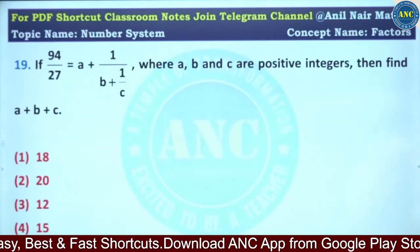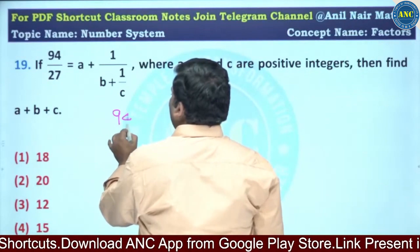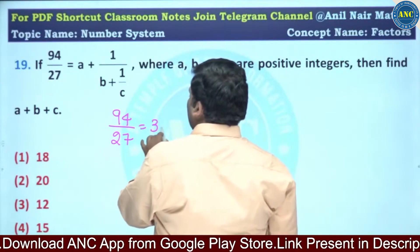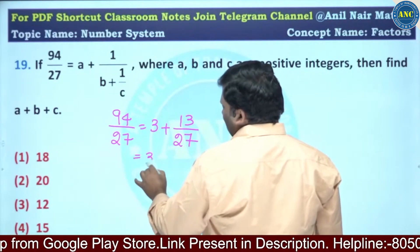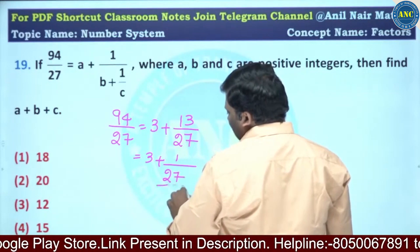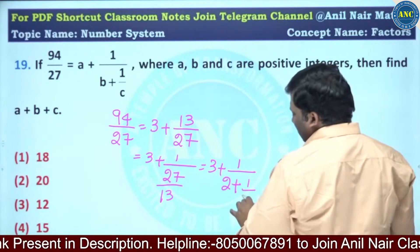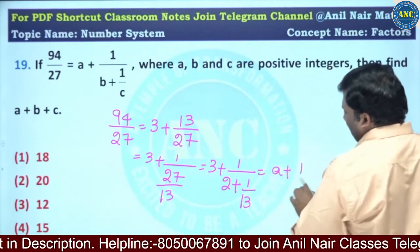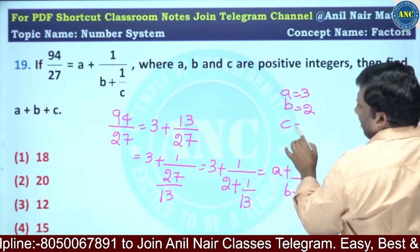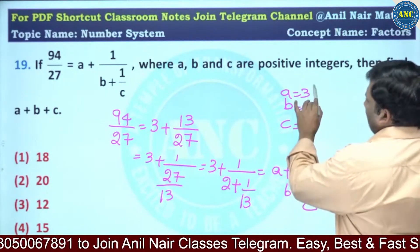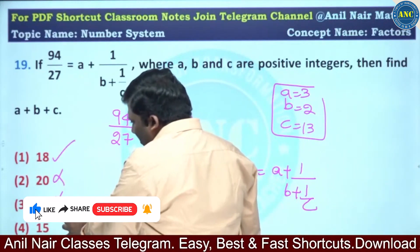Question 19: the numerator is greater than the denominator. 94/27 — since 27 threes are 81, the remainder is 13. So 94/27 = 3 + 13/27, which equals 3 + 1/(27/13). And 27/13 = 2 + 1/13. So the expression is A + 1/(B + 1/C), giving A = 3, B = 2, C = 13. Therefore A + B + C = 3 + 2 + 13 = 18.